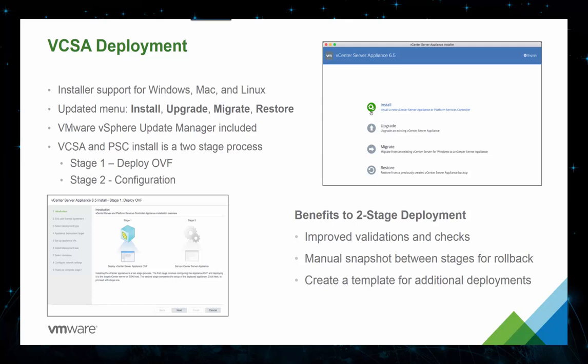The stage two deployment has a number of benefits. Improved validations let customers deploy with confidence. Once stage one is complete, customers can take a snapshot of the VM and roll back if any mistakes are made in stage two, making the deployment simpler and easier to recover from an error without having to start from scratch. So you deploy stage one, take a snapshot, then do stage two. This prevents customers from having to start over completely if anything goes wrong during the deployment process.